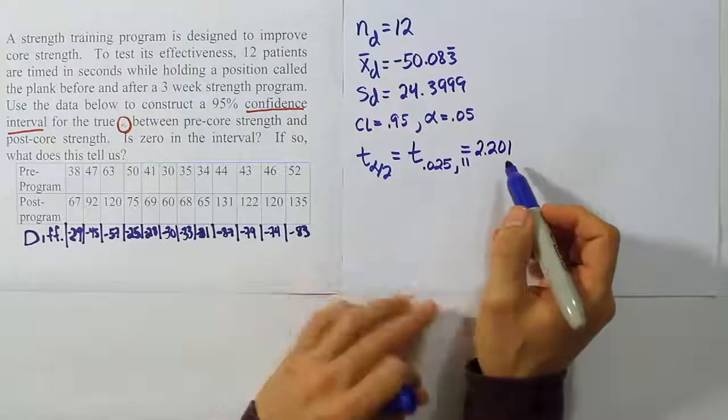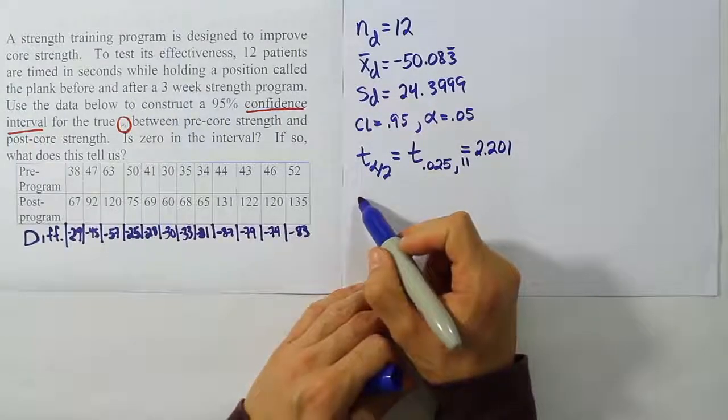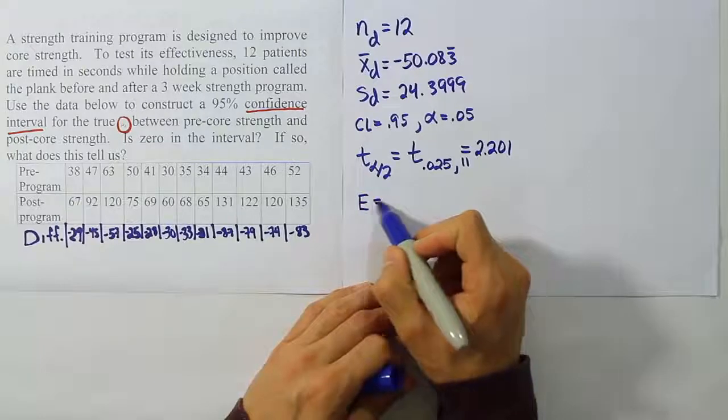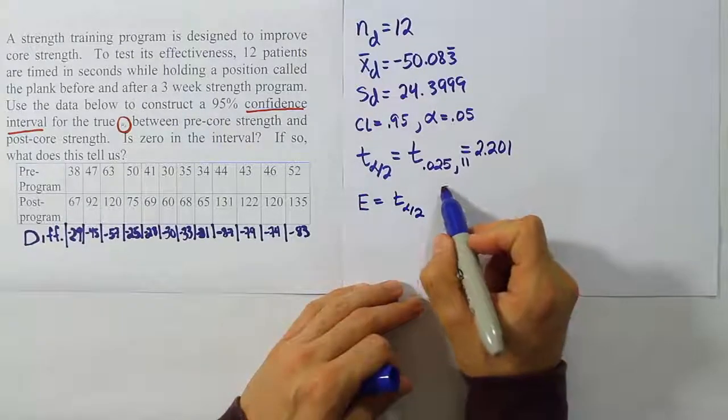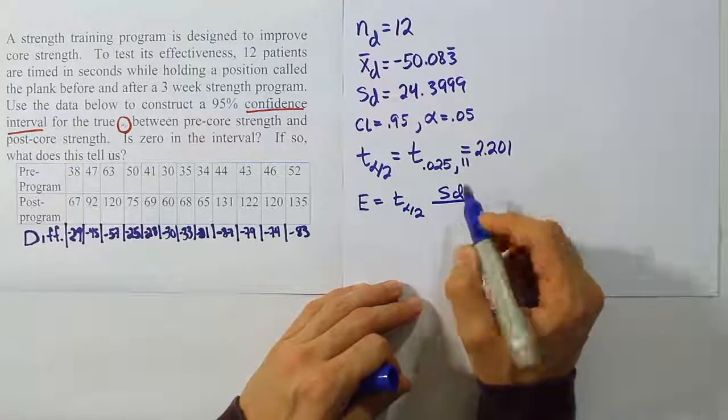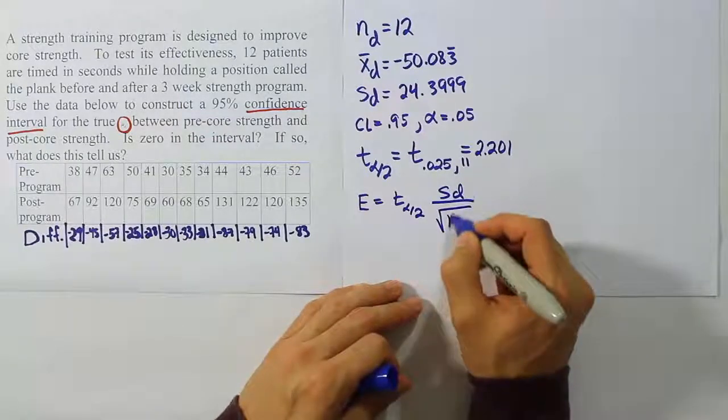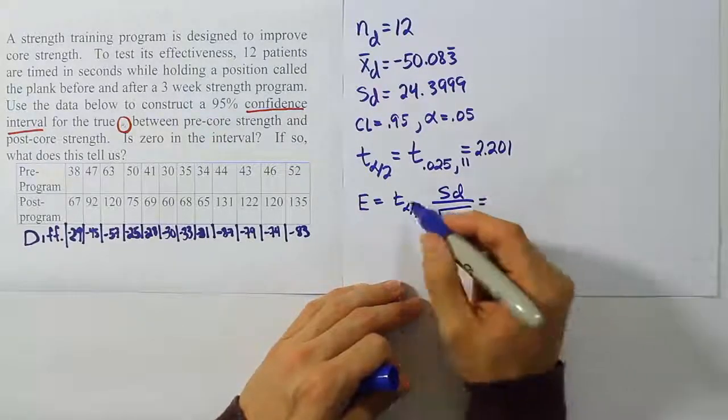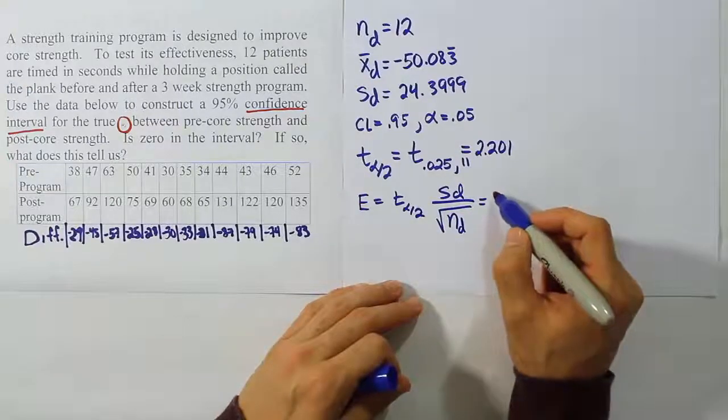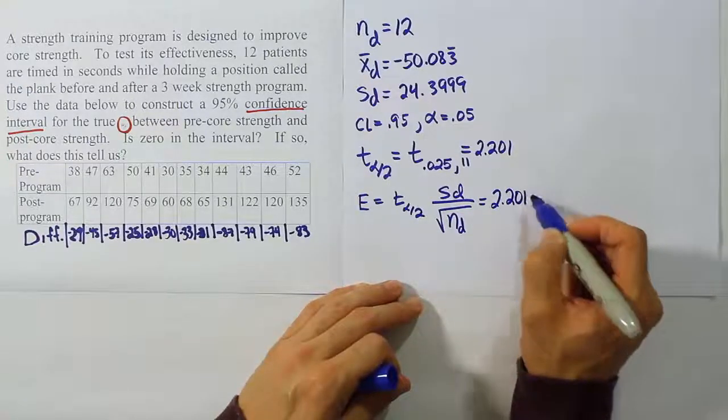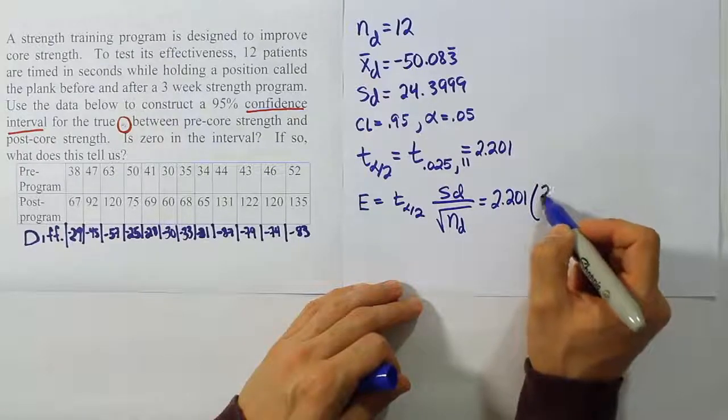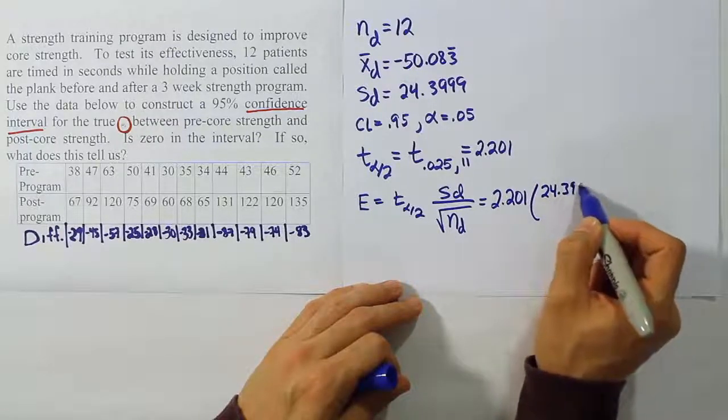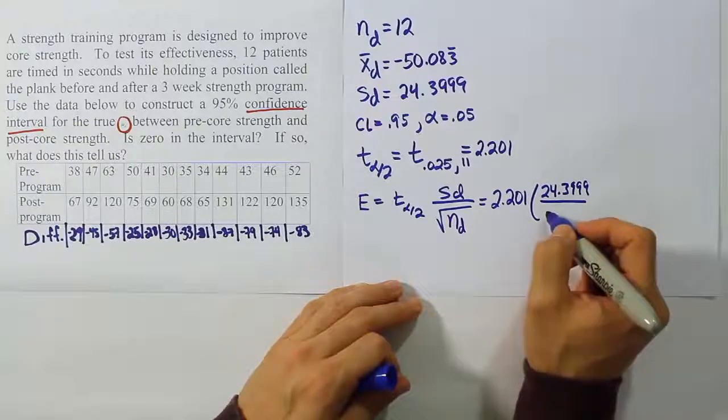And once we have that critical T value, we can now plug it into the margin of error formula. The margin of error is going to be T alpha divided by 2 times S sub D divided by the square root of N sub D. So 2.201 times the standard deviation, which is going to be 24.3999, all over the square root of 12.